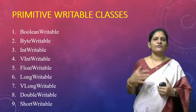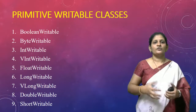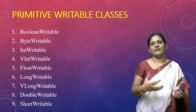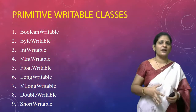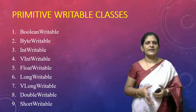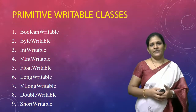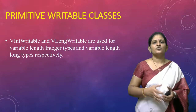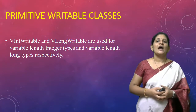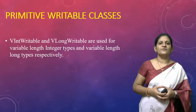To store boolean data (true or false) we use BooleanWritable. For small integer data we use ShortWritable. For very large integer values we use LongWritable. For real numbers we use either DoubleWritable or FloatWritable. VIntWritable and VLongWritable are used for variable-length integer and long types respectively. We have many writable classes present in Hadoop to store different kinds of data.